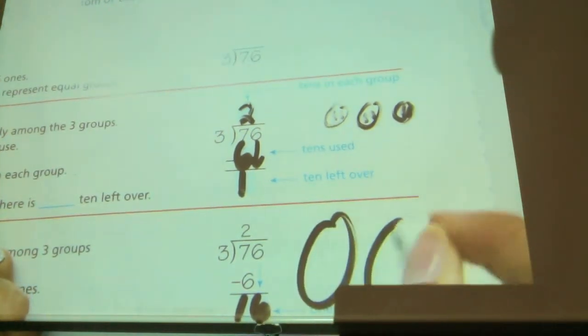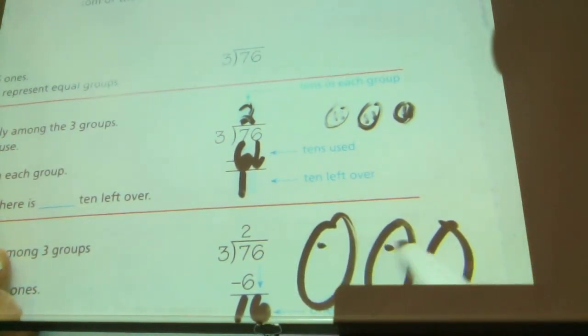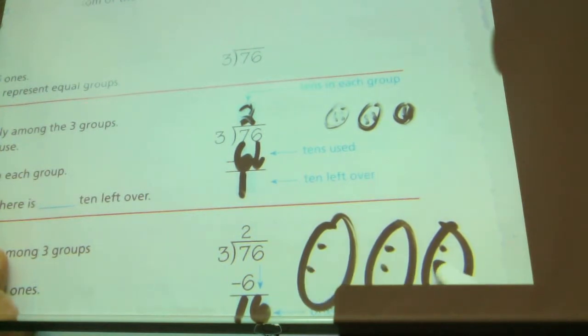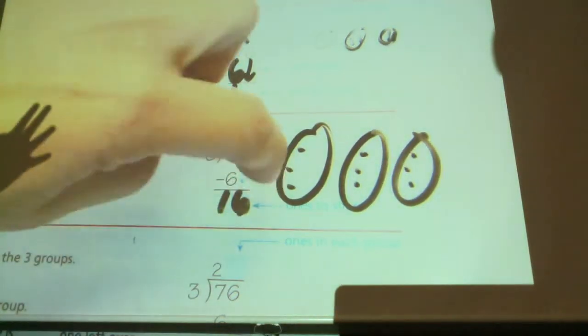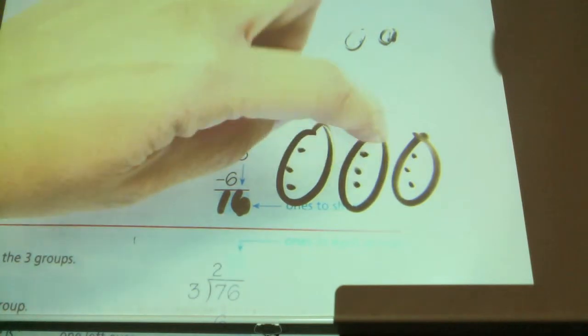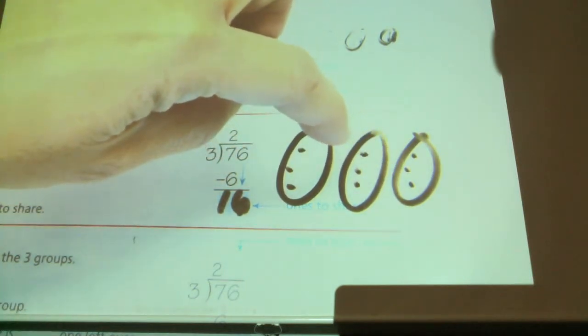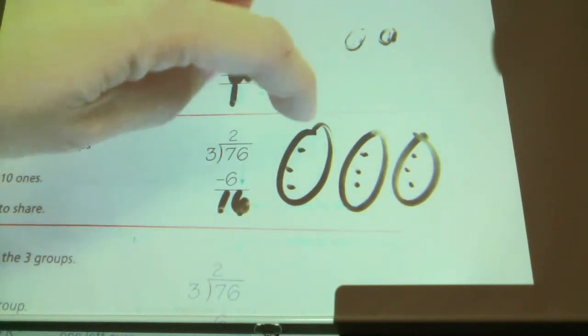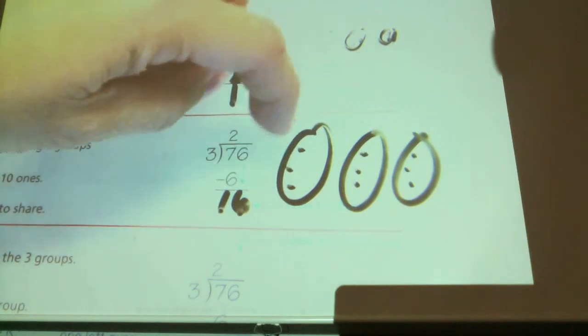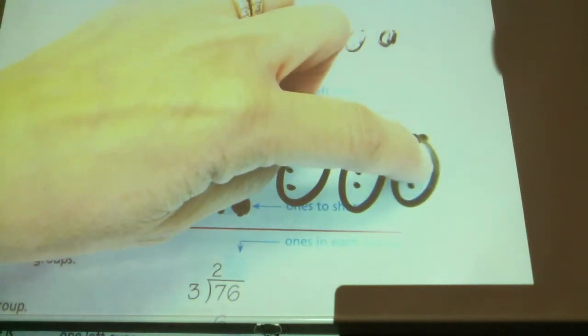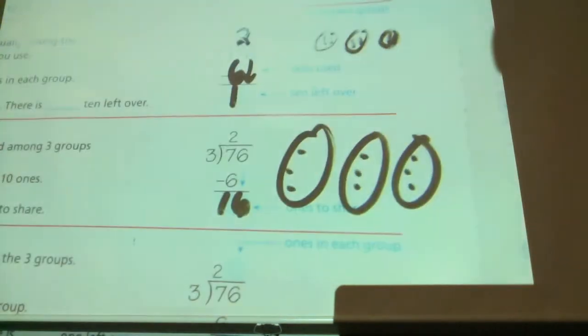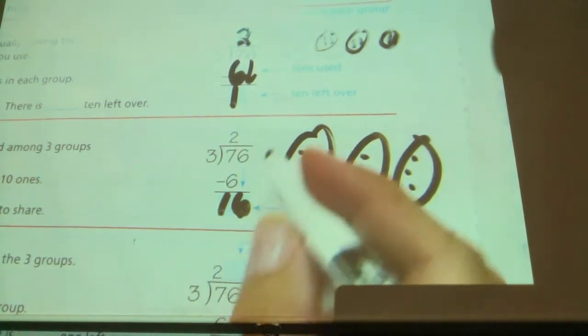If I divide those into three groups, how many, think about it, are going to be in each group? I'm not going to finish it. I want you to tell me how many are going to be in each group. So six. If I had six, six and six, that would be how much? Eighteen. Is that too much? So let's go less. Five. If I put five in each group, that's five, ten, fifteen. Does that work? Yes. We're going to have some left over though, aren't we?